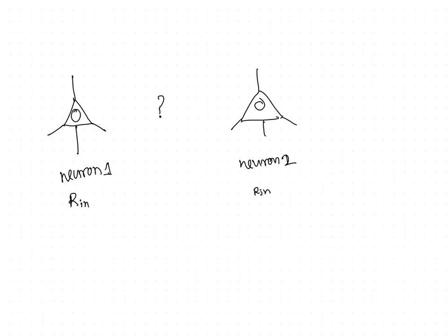So whenever we have high input resistance, that means this neuron is more excitable. And this neuron, neuron two, is less excitable compared to neuron one.